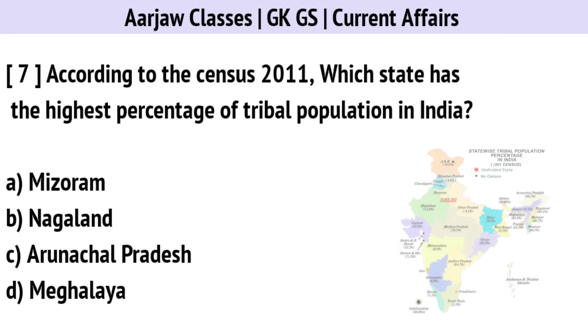According to the census 2011, which state has the highest percentage of tribal population in India? Correct option is A — Mizoram.